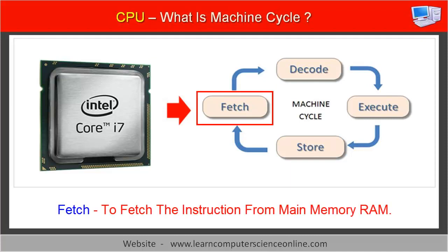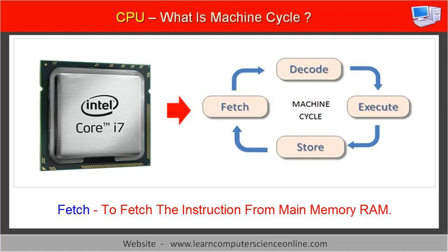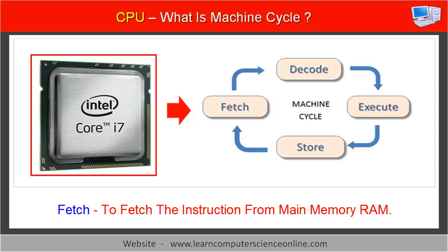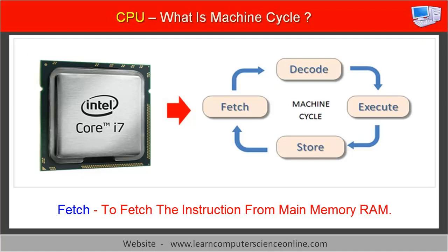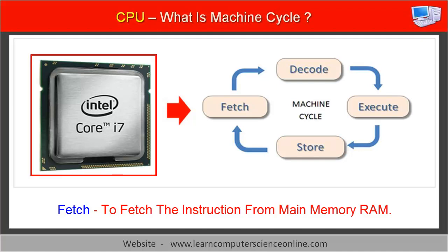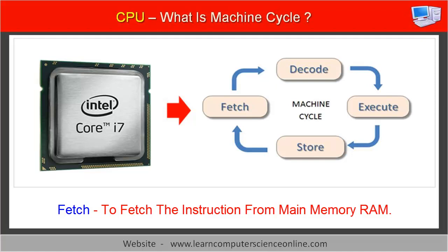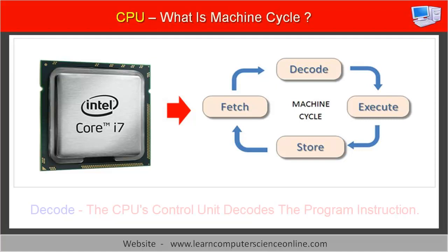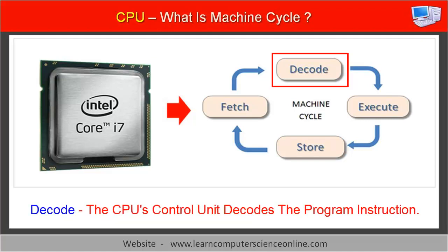The fetch part of the machine cycle includes fetching the program instruction from memory. The CPU initiates the program execution by fetching the program instruction and the corresponding data from the main system memory, RAM.